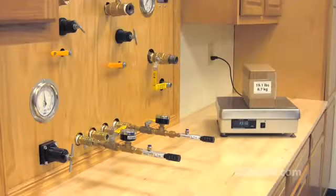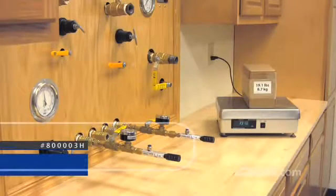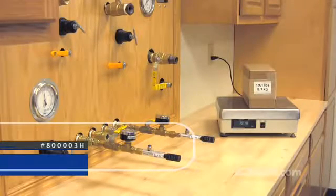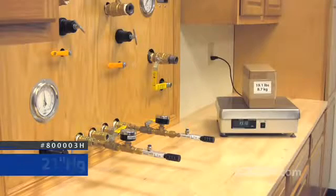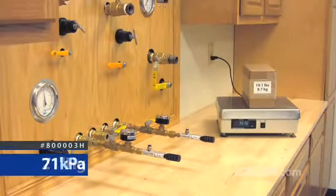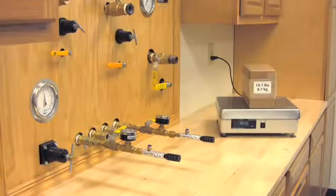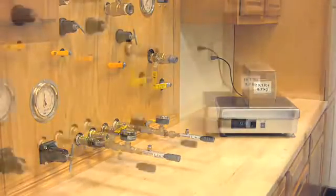Next, we'll test our second model, the 800003H, which is the low vacuum unit for porous applications. This model generates 21 inches or 71 kilopascals of vacuum. This is considerably less than the 27 inches of mercury or 91 kilopascals we just tested.